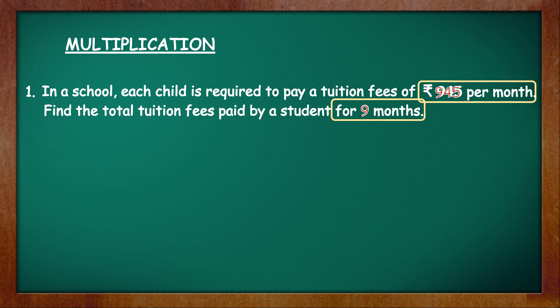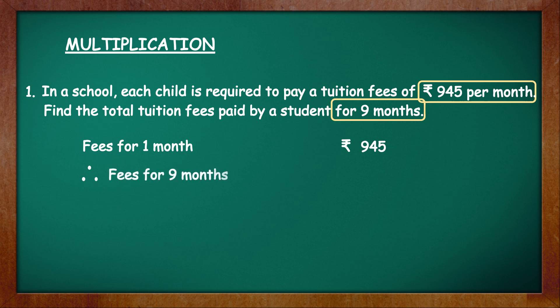Begin with the first statement. We know the fees for one month: rupees 945. Now we can straight away find the fees for 9 months. So write: therefore, fees for 9 months, and to find that you have to multiply 945 into 9.